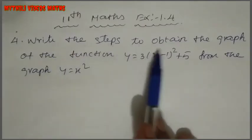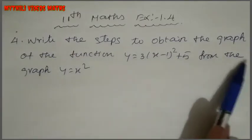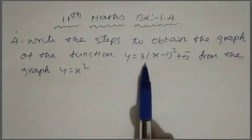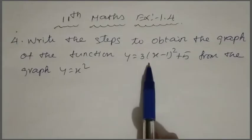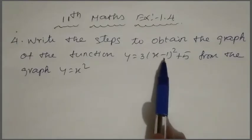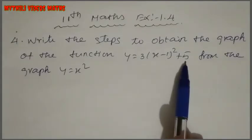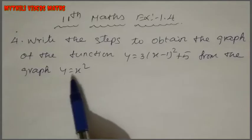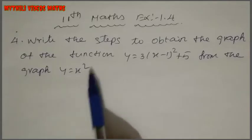Write the steps to obtain the graph of the function y equal to 3 into x minus 1 whole square plus 5, starting from the graph y equal to x square.